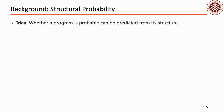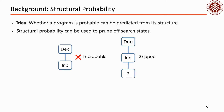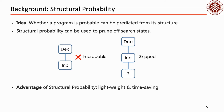The idea of structural probability is that whether a program is probable can be predicted from its structure. For example, it is improbable for a decreasing operator to occur directly after an increasing operator. Therefore, structural probability can be used to prune off such states, and all improbable programs can be skipped. The main advantage of structural probability is that it can be captured by lightweight models, and thus using it is time-saving.